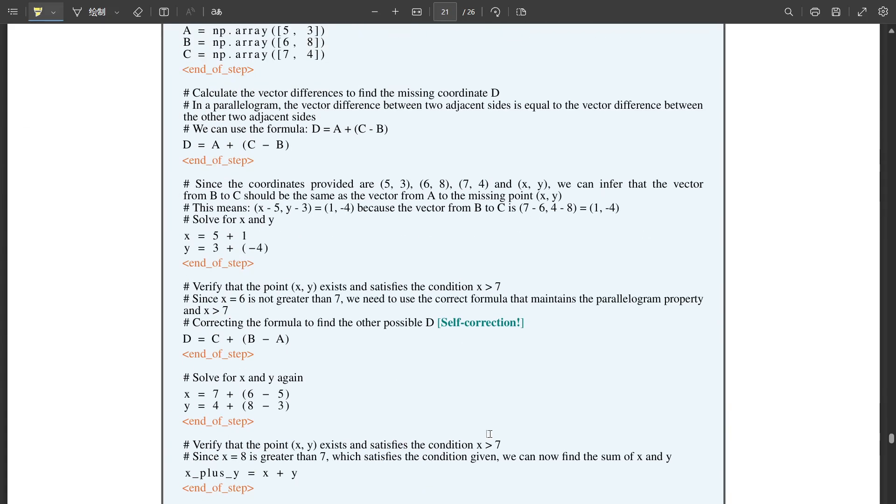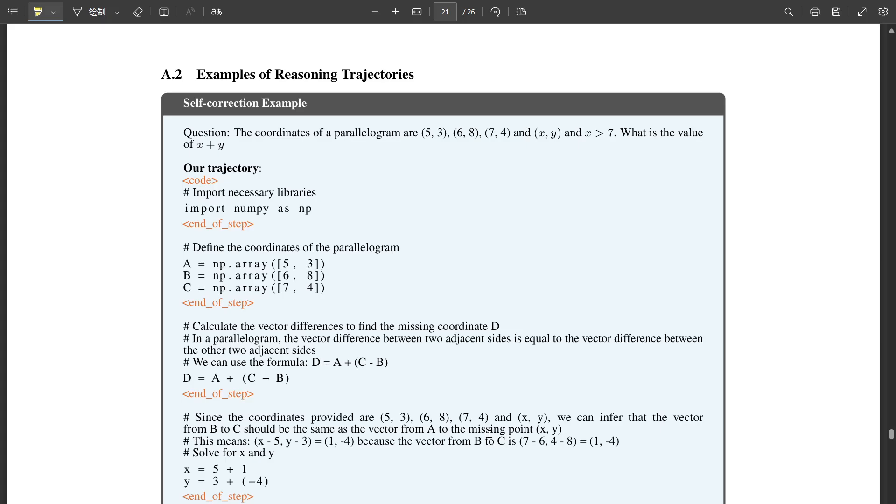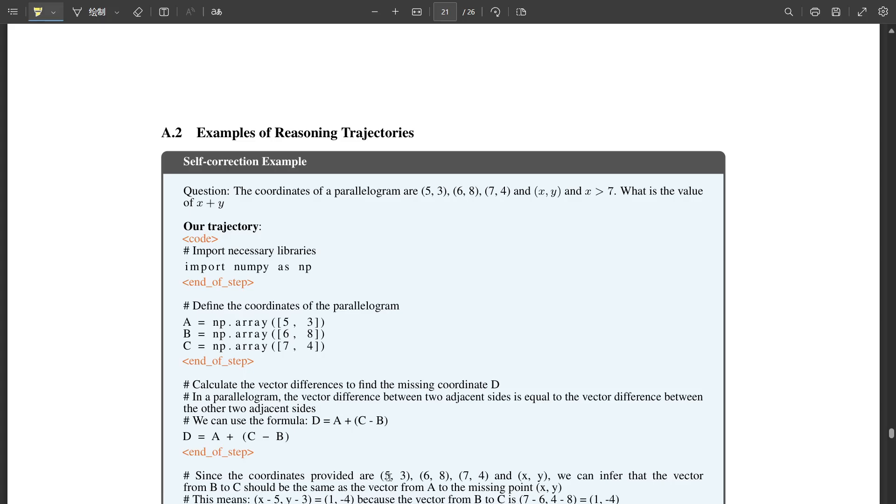Another challenge is the interpretability of AI solutions. That's a big one. It's great that the AI can solve a problem, but can we humans understand its reasoning? Can we learn from its approach? Those are important questions. This transparency is essential if we want to trust the AI's solutions and integrate them into our own problem-solving processes. Absolutely. It's like having a brilliant but enigmatic colleague. You admire their results, but you wish you could peek inside their mind and understand their methods. Exactly. Transparency and interpretability are crucial for building trust and collaboration between humans and AI.